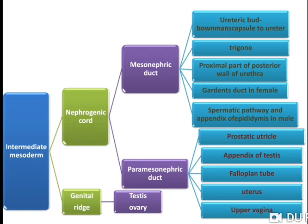Intermediate mesoderm differentiates into nephrogenic cord and genital ridge. The testis and ovary are derivatives of the genital ridge. Nephrogenic cord further differentiates into mesonephric duct and paramesonephric duct. Mesonephric duct further differentiates into ureteric bud, trigone, proximal part of the posterior wall of urethra, Gartner's duct in female, spermatic pathway, and appendix of epididymis in males.